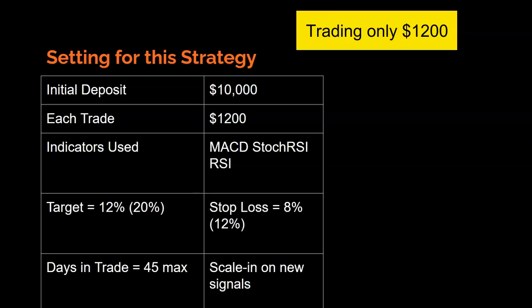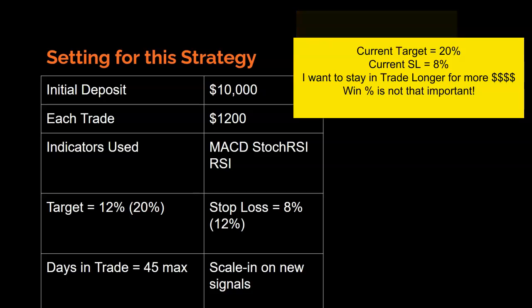Trading with only $10,000 in my account, each trade consists of about $1,200 or a little more. The indicators I use are MACD, Stochastic RSI, and RSI — with an 8% stop loss and 20% target. I scale in, and if the trade is working out or not, I exit at 45 trading days. It's more important for me to stay in the trade longer.